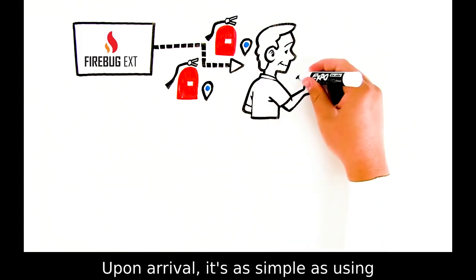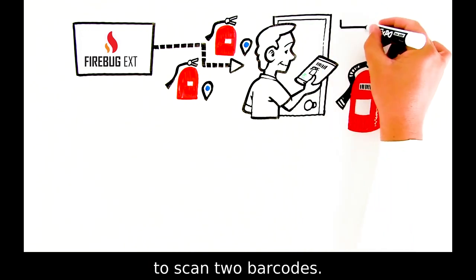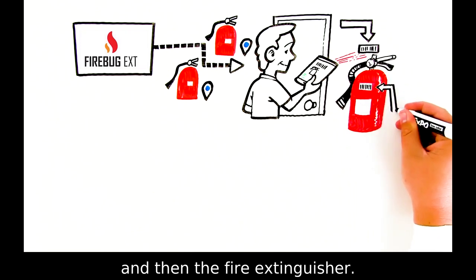Upon arrival it's as simple as using your Android mobile device to scan two barcodes. First the location and then the fire extinguisher.